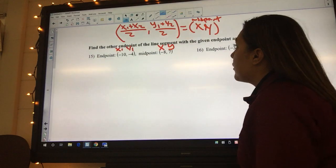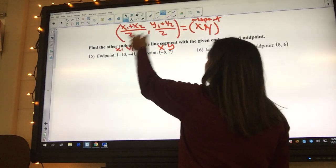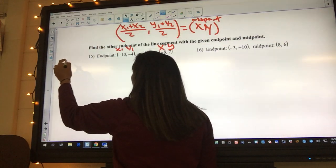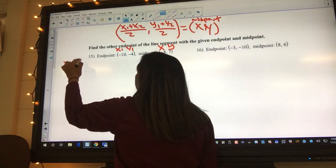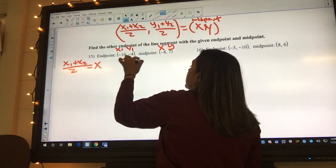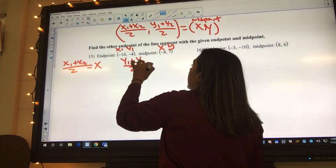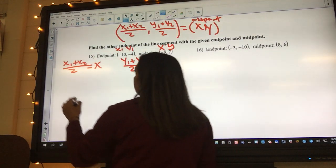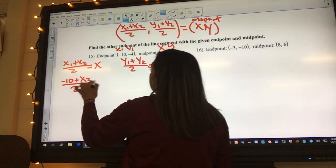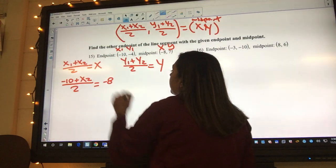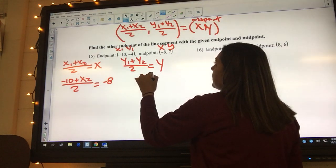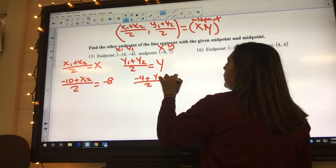So we can plug them in, and we set the x's equal to the x and the y's equal to the y's. So I got x1, well, I'll just write it out. x plus x2 over 2 equals big X, and then we got y1 plus y2 over 2 equals big Y. So I got negative 10 plus x2, because I don't know it, over 2 equals, and my big X is going to be negative 8. And I can write the y's out too, so negative 4 plus y2 over 2 equals 7.